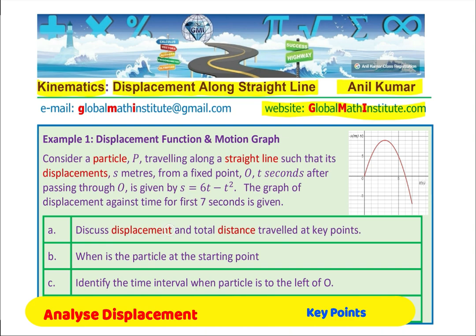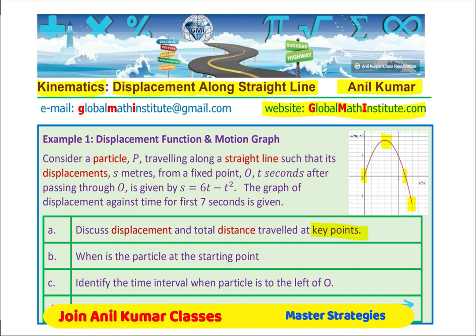Part A is to discuss displacement and total distance traveled at key points. Key points could be the starting point, end point, returning points, and the intercepts. Part B asks when is the particle at the starting point — that means when t is 0. Part C asks us to identify the time interval when the particle is to the left of O, and then represent the information on a motion graph along a straight line with a reference point O.